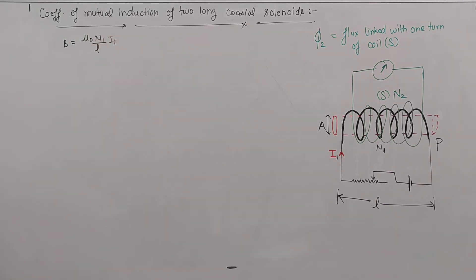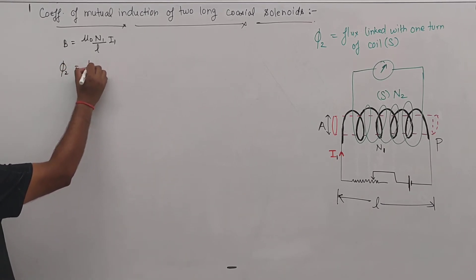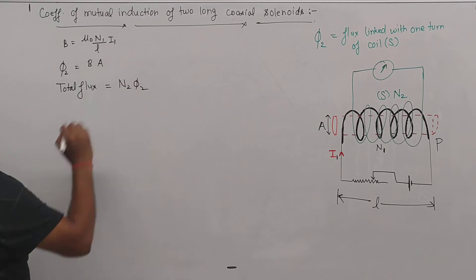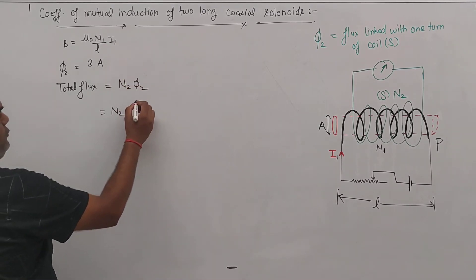Now phi2 is equal to magnetic field linked with area. And total flux is equal to n2 into phi2. So n2 and the value of phi2 is B into A.